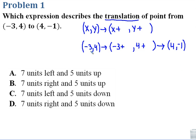Well, to get from negative 3 to 4, that would be negative 3 plus 7, because negative 3 plus 7 gives me 4. To get from 4 to negative 1, we take 4 and subtract 5.